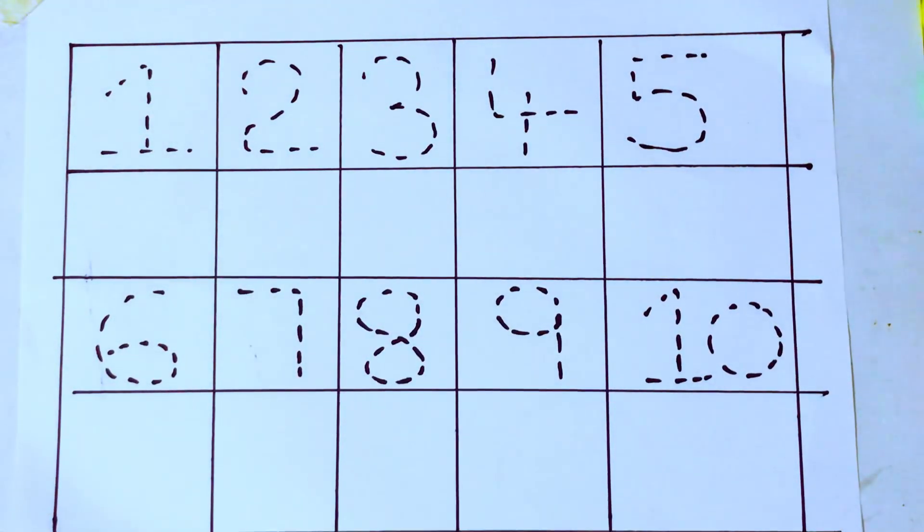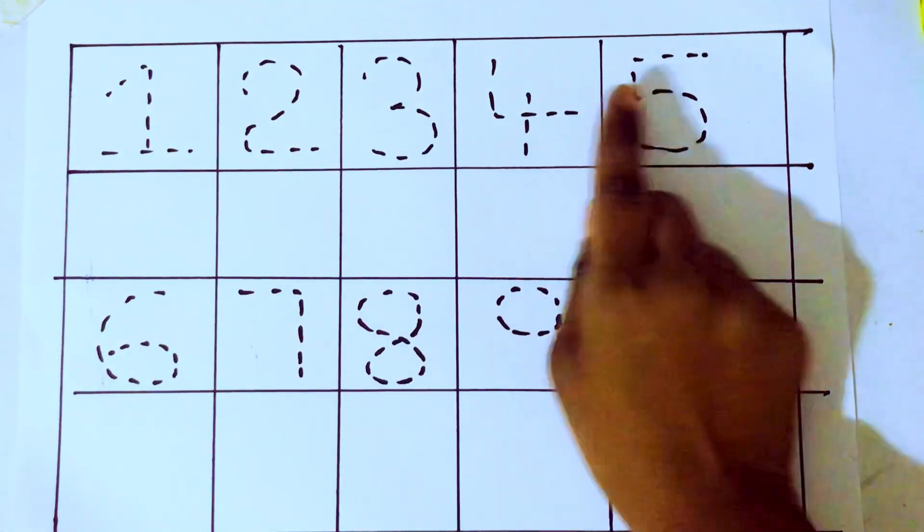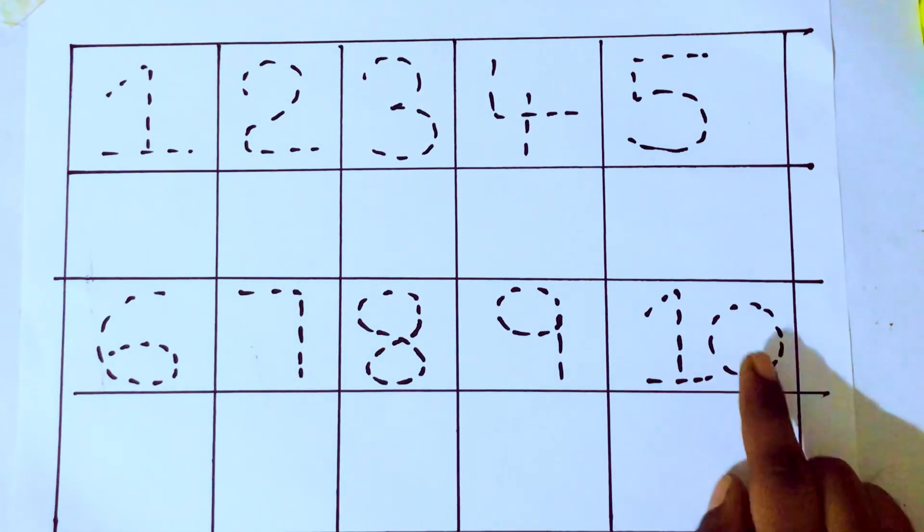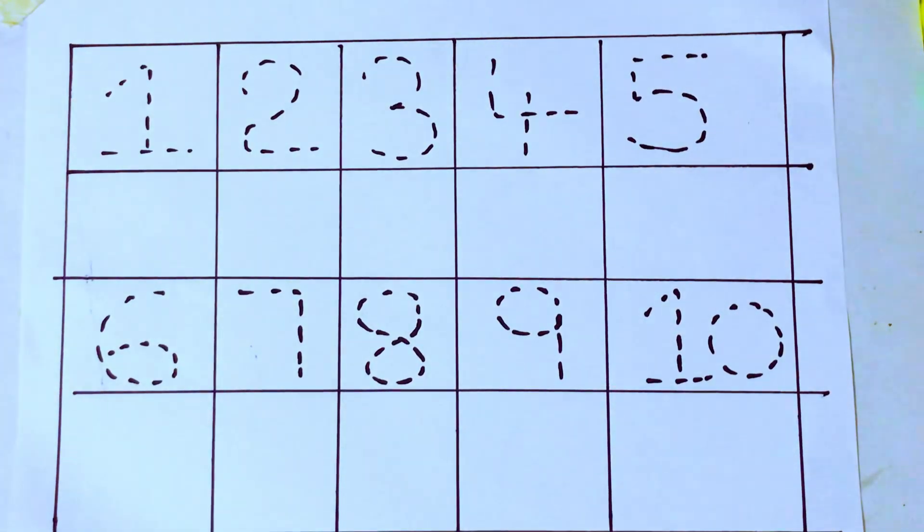Hello kids, how are you? Welcome to our channel. Today we are going to learn numbers 1 to 10: 1, 2, 3, 4, 5, 6, 7, 8, 9, 10. And we are going to write the letter numbers. Okay, let's learn some colors.